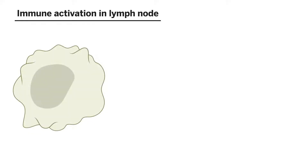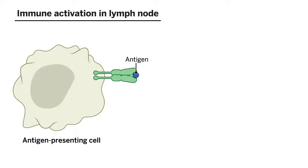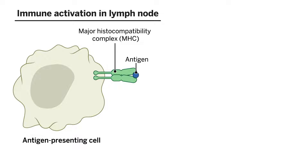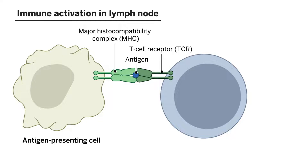So taking a step back — Immunology 101. Many times a day, an antigen, the small blue round circle at the top, is presented on an antigen-presenting cell by way of an MHC molecule, a major histocompatibility complex molecule. It's presented to the TCR, the T-cell receptor on that bluish-purplish cell, the T-cell, and that is signal one.